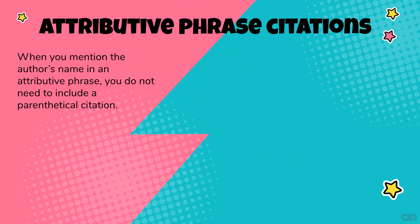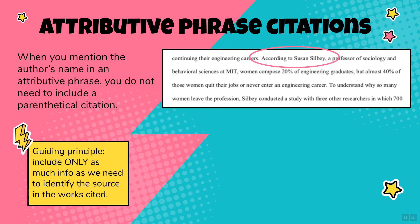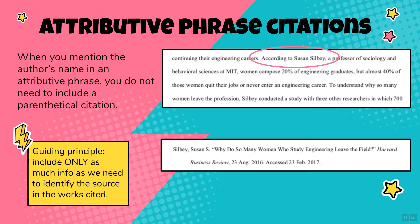An attributive phrase is when you mention the author's name and their credentials in the body of the paper. For more information on this, watch the integrating sources video. When you mention the author's name in an attributive phrase, you do not need to include a parenthetical citation. For example: 'According to Susan Silby, a professor of sociology and behavioral sciences at MIT,' and then the information follows. Since Susan Silby appears in the Works Cited and has already been cited as the author, you do not need a parenthetical citation on top of the attributive phrase.